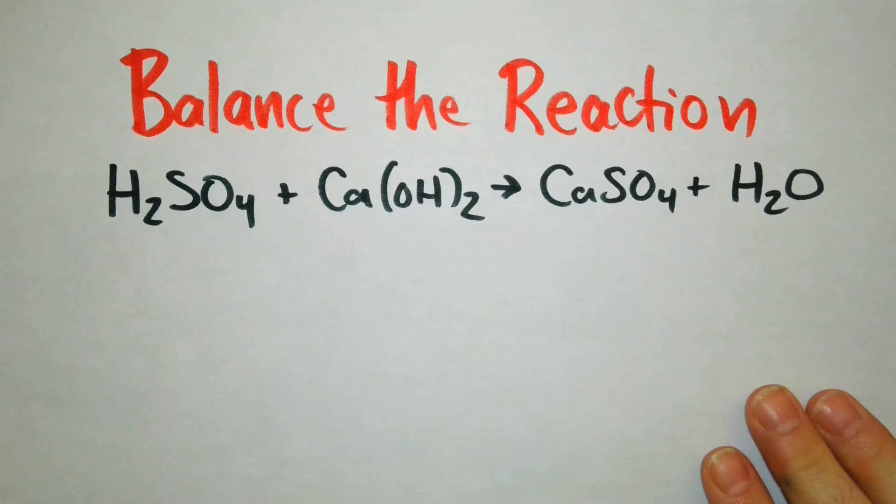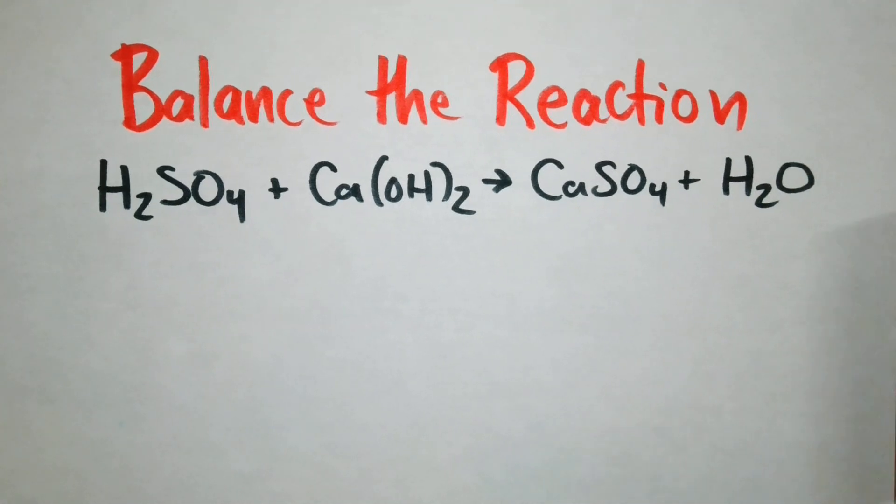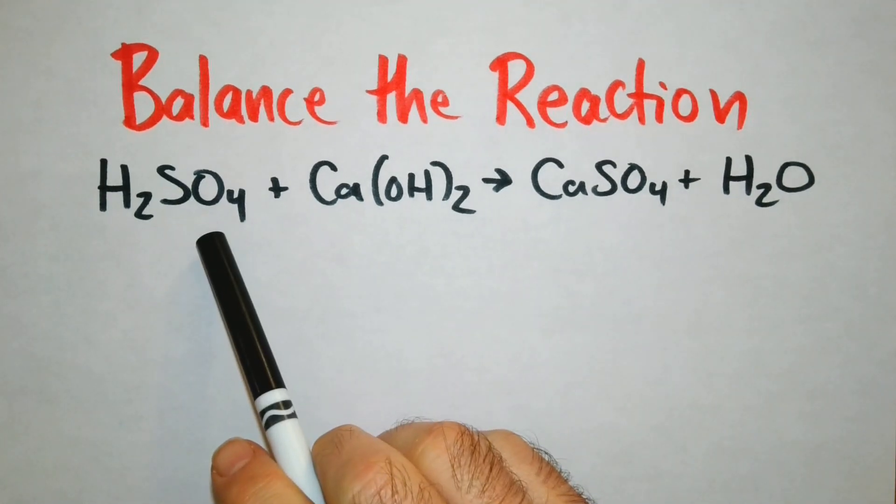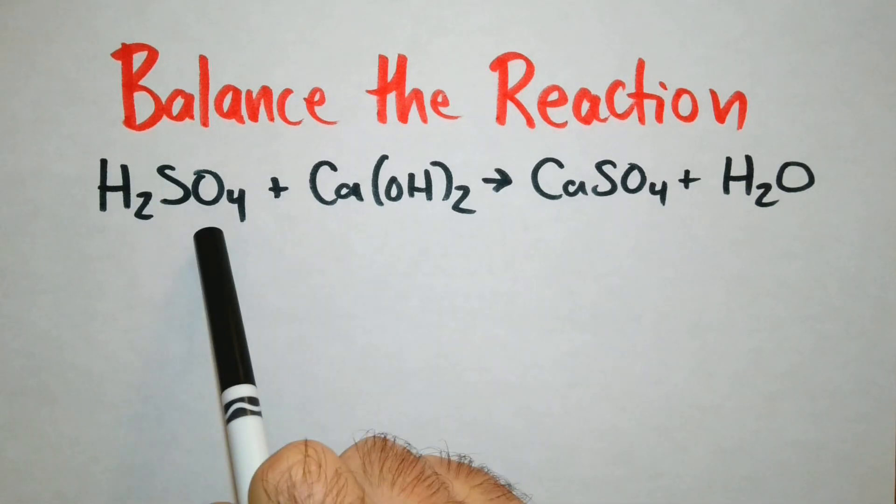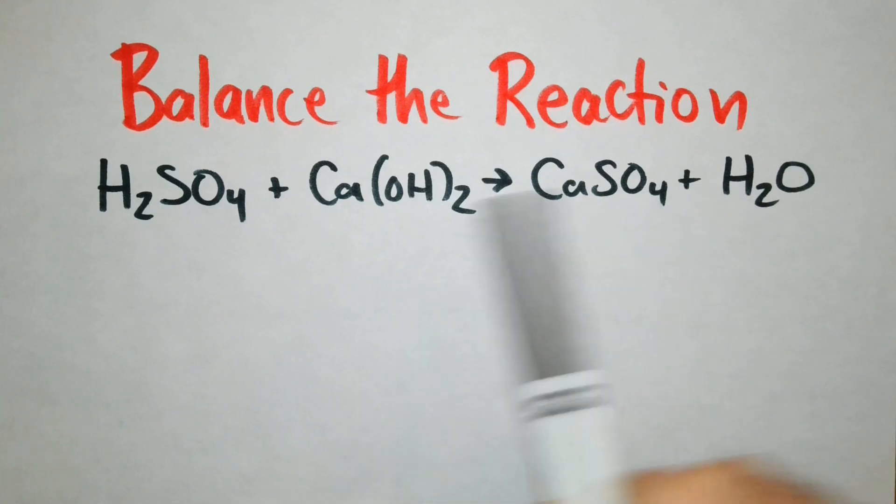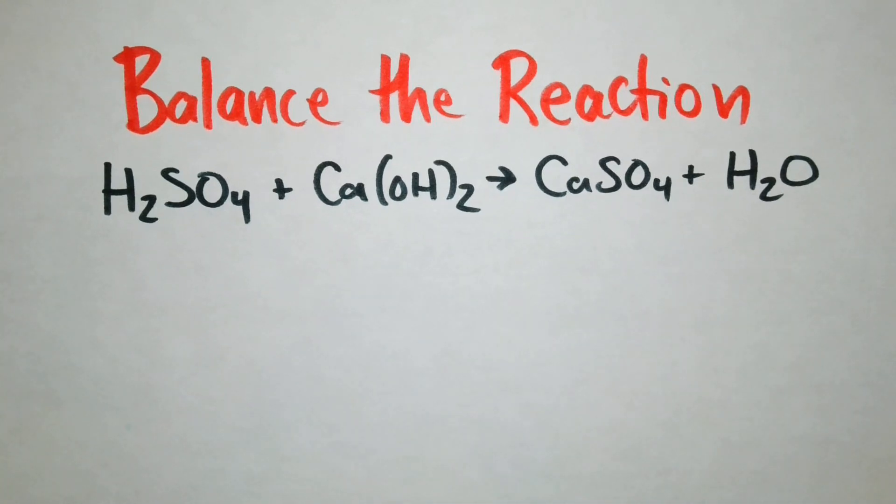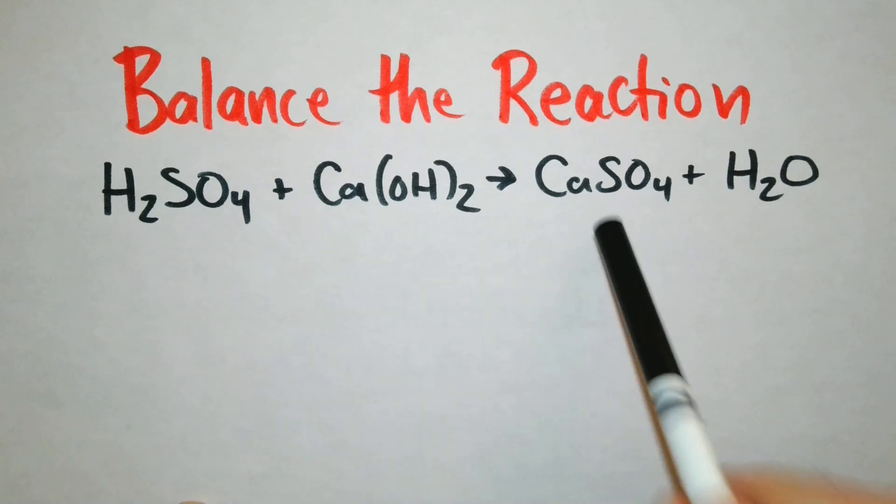We're going to be balancing the reaction between sulfuric acid and calcium hydroxide. Well there's something to notice on here that we can use as a trick to make this easier. The sulfate is a polyatomic ion that exists on both sides of the equation. This hydroxide not necessarily on both sides of the equation. So what we're going to do is we will group the SO4 together.